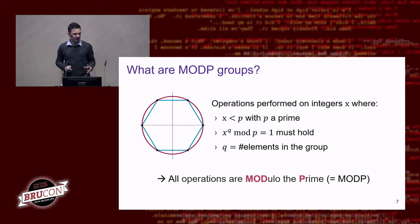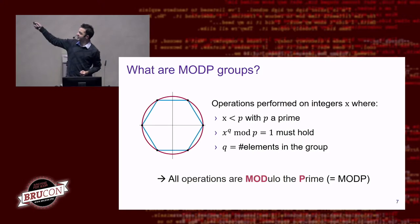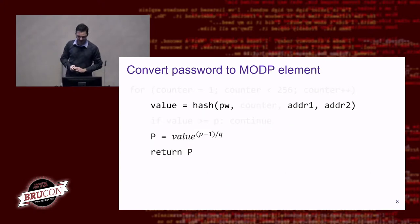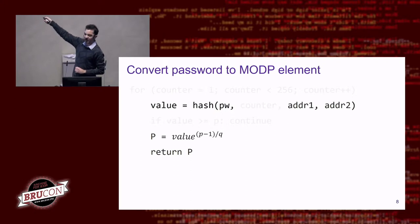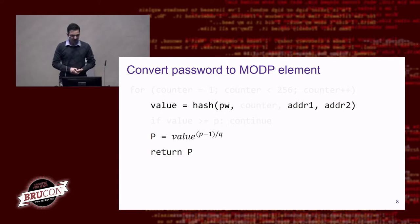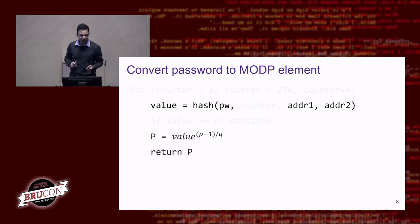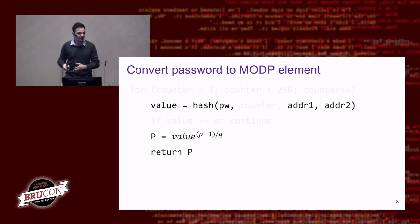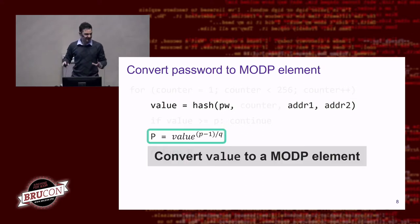How can we convert a plaintext password into a number satisfying these properties? A naive approach is to take the plaintext password and hash it together with the MAC addresses of the client and access point. The result is interpreted as an integer. We then perform a calculation to ensure this integer satisfies the special equation, making value P a valid member of the modP group.